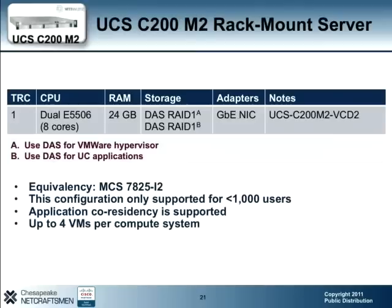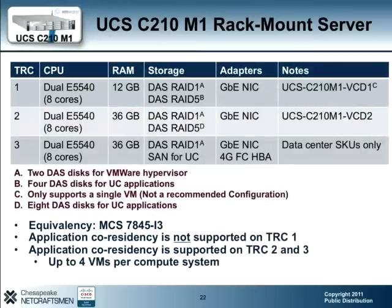The UCS C200M2 is equivalent to an MCS7825i2 and only supports up to 1,000 users. The TRC only supports the use of DAS for running the hypervisor and the UC application VMs, and co-residency is supported with up to four VMs per compute system. The UCS C210M1 platform has three TRCs equivalent to an MCS7845i3. TRC1 and TRC2 are bundled packages differing mainly in the amount of RAM. TRC3 adds support for running the UC application from SAN but does not have an associated VTG bundle. It is worth noting that TRC1 does not support application co-residency — only one UC application can be loaded. TRC2 and TRC3 both support co-residency for up to four UC applications.